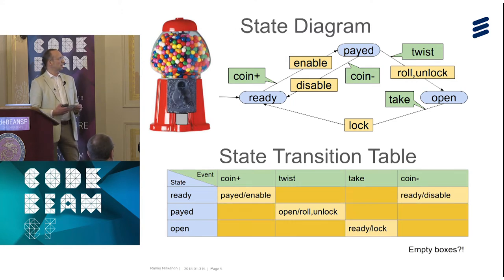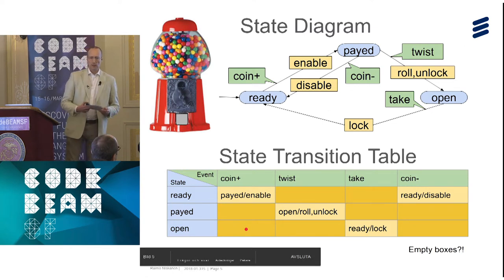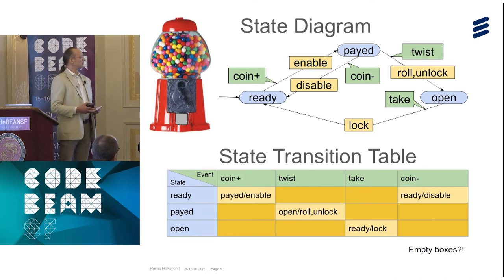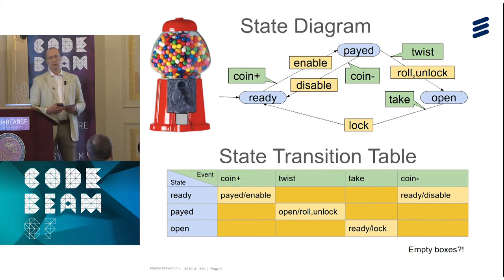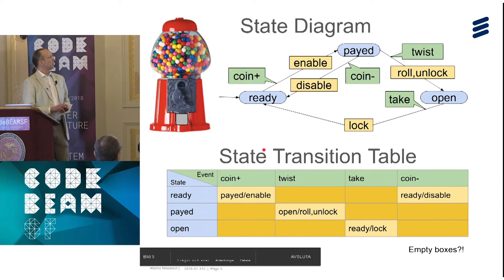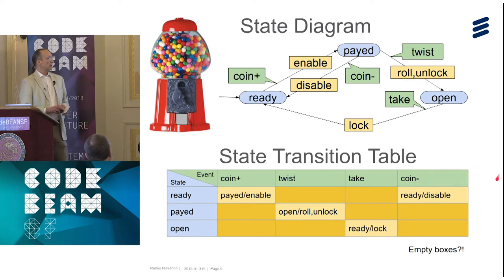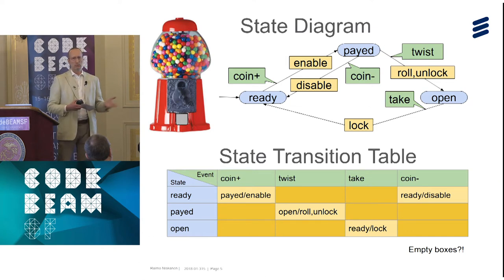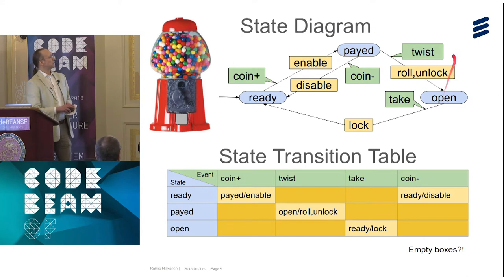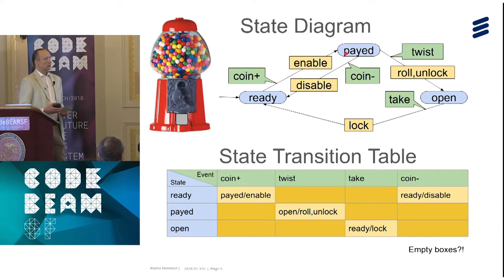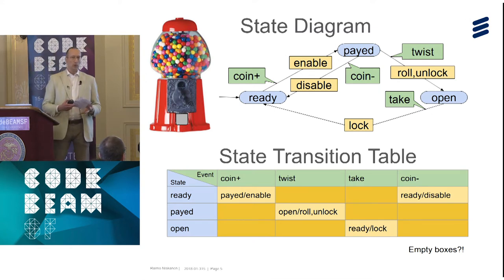But the table says something more — it has empty boxes. They ask the question: what should I do if I get a 'coin_plus' event in state 'open,' for instance? You have to handle these cases too, and this is not written in the diagram. Another thing not written in the state diagram often is status queries — in any state you get an event that is a question, you answer it and go back to the same state. So for every kind of query you'd have a small loop in the state diagram, which clutters it. This is often handled by subtext or side notes.